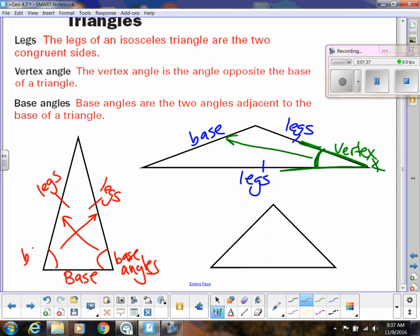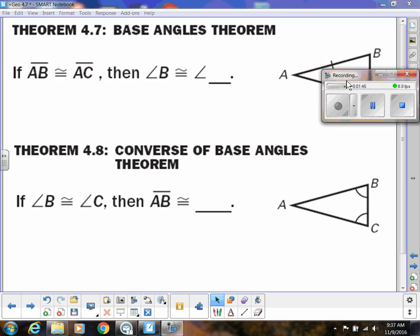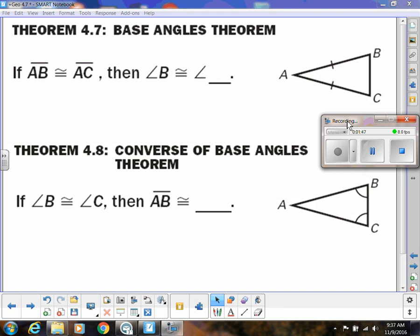Okay, so now that we've got that vocabulary cleared up, let's talk about some theorems. We have the base angles theorem, and that says, if I know, and I'm talking about a triangle, if AB is congruent to AC, so we have those legs of the triangle, then angle B is congruent to angle C. So those base angles are congruent.